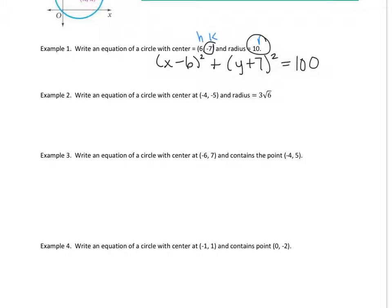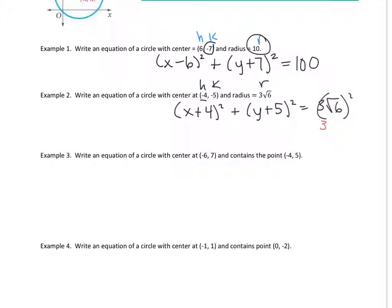Example two: h, k, and r are given. It's going to be (x plus 4) squared, because it's a negative, plus (y plus 5) squared equals (3 root 6) squared. To simplify 3 root 6 squared, this is the same as 3 squared times root 6 squared. So 3 squared is 9, root 6 squared is 6, giving us 54.